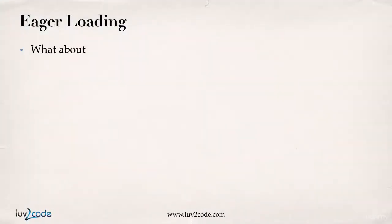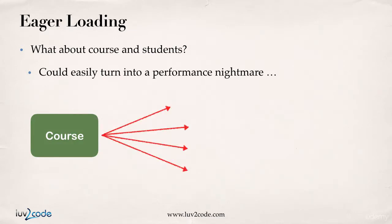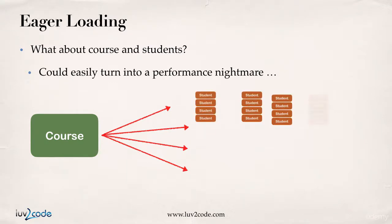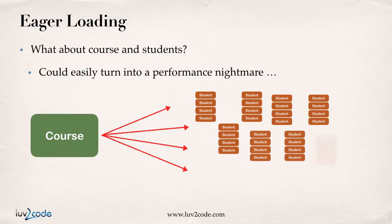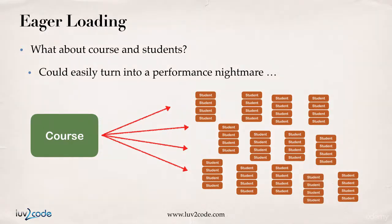Let's take a look at another example with eager loading — what about a course and students? This could easily turn into a performance nightmare. If we were to load a course and then load all of the students for that course, this would most likely slow down our application. Because just like the course you're attending now, a given course could have 10,000, 20,000, maybe 50,000 students. And we really don't need all that data at this point.